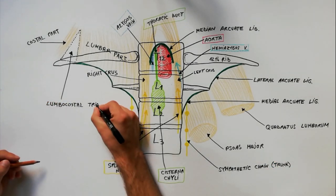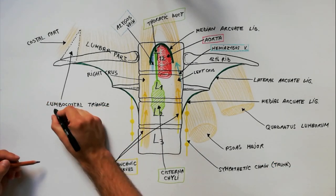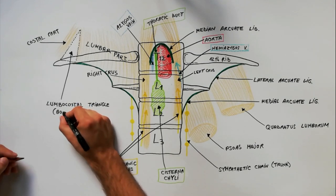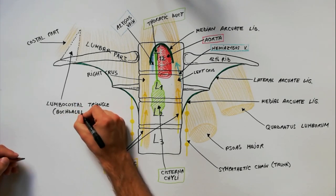Parietal pleura and renal capsule are in contact in this space, so possible infection can be transmitted through this space.